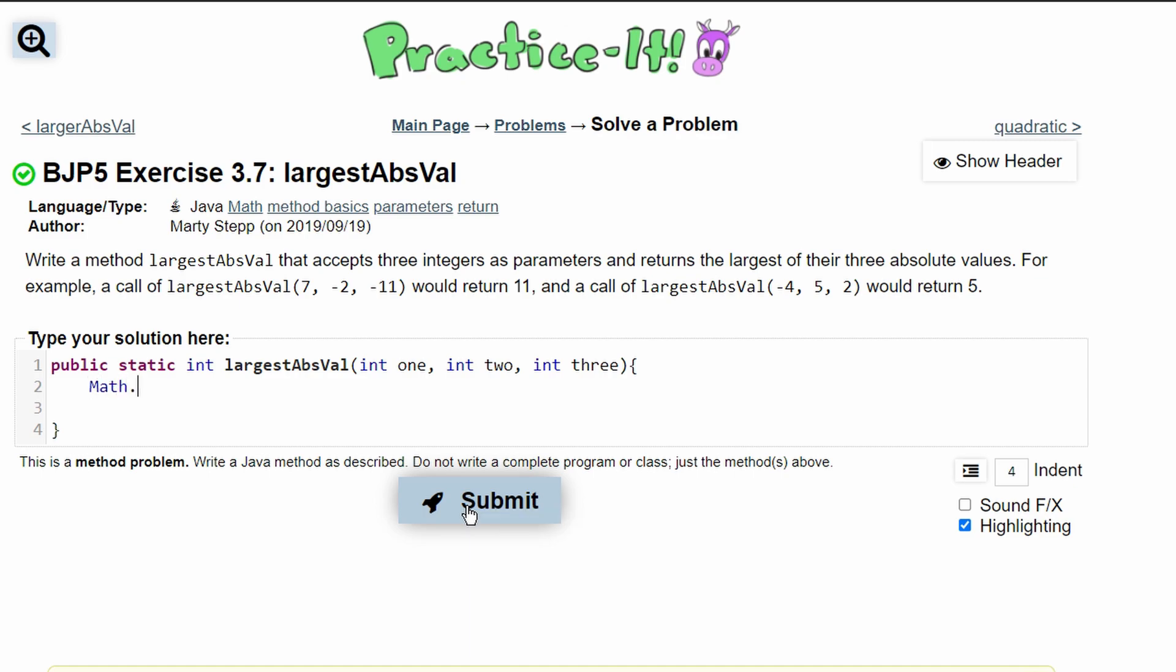we'll have Math.max, and in here we need to make these an absolute value, so we're going to have Math.abs(one) and Math.abs(two).